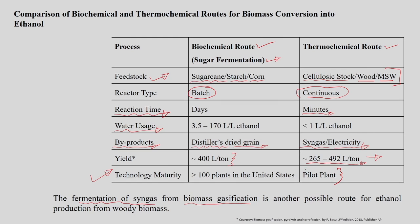Very limited information is available about the thermochemical conversion route; it is tested only at pilot scale and not widely known at commercial scale yet. However, plants are available in the United States and India for ethanol production using this technology. The syngas must be cleaned first and then fermented using suitable microorganisms to produce ethanol.